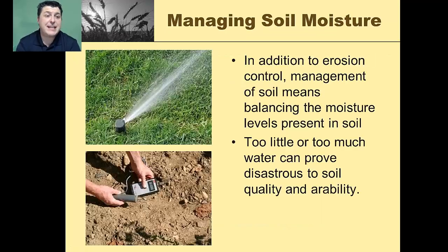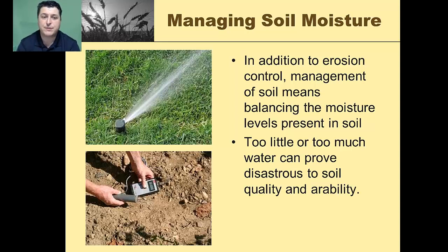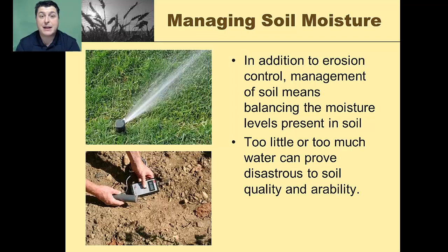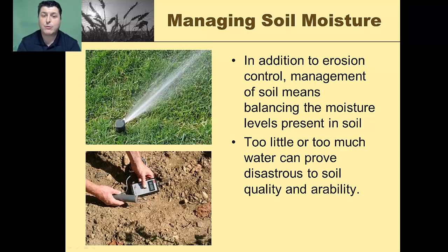If we need to add water, we want to make sure we're not applying too much so that the soil maintains appropriate moisture levels, which also helps retain nutrients. Digital moisture monitors can tell us how much water is present so we can apply water effectively. To avoid wasting water, we should use drip irrigation to put water right where it's needed.